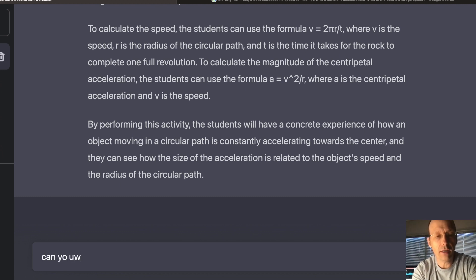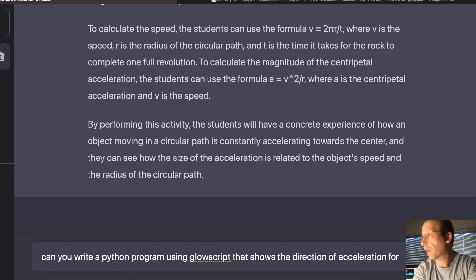Let me just try one more thing. Okay. Can you write... Because it's pretty good at writing programs. A Python program using GlowScript, GlowScript, that shows the direction of acceleration for... Alexa, stop. Sorry. I have two robots, right? That'd be fun to get one talk to the other, but okay.